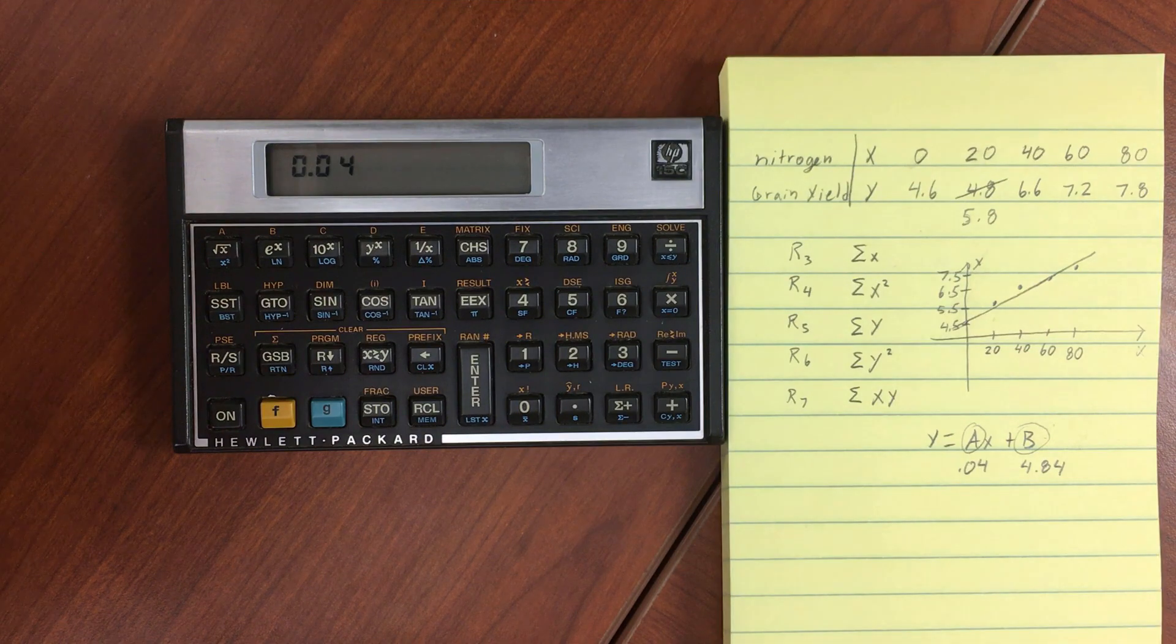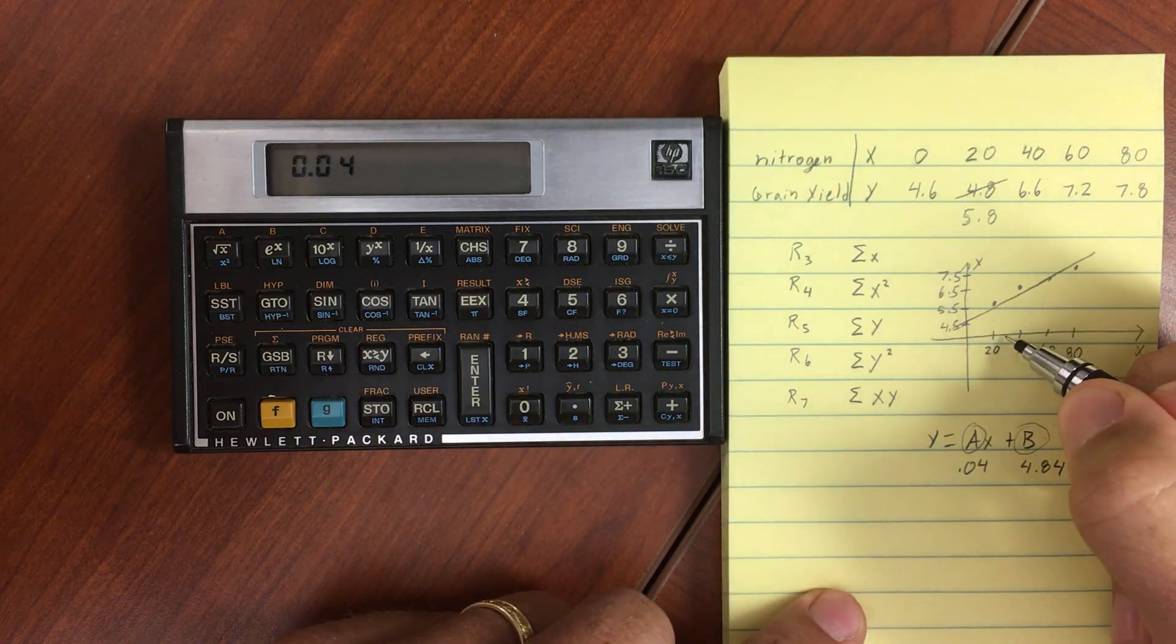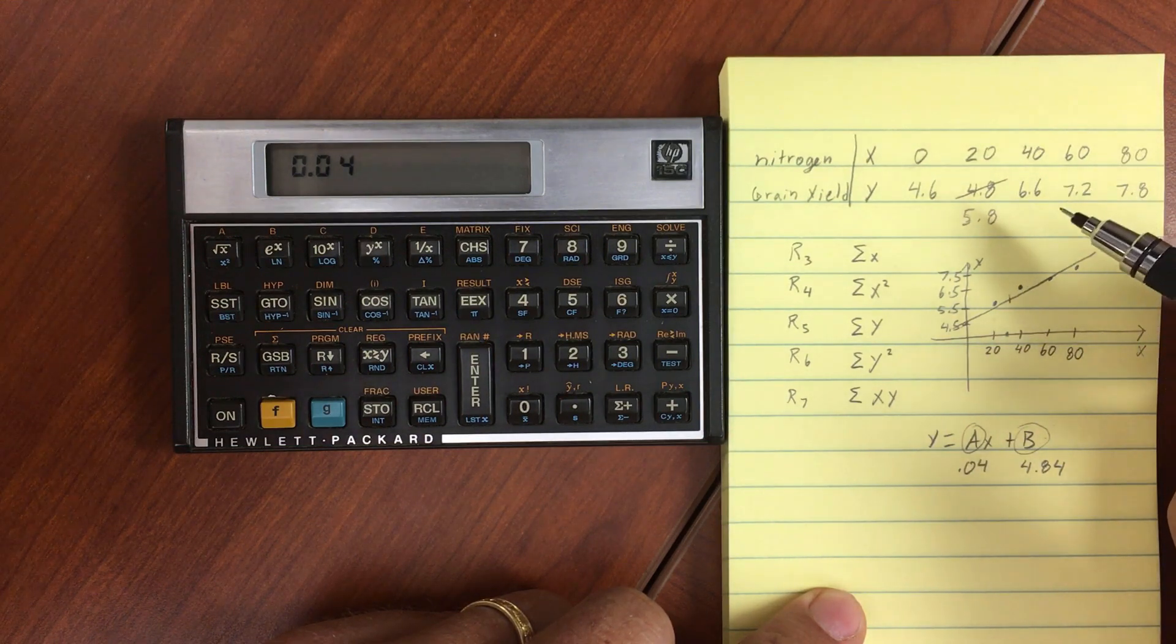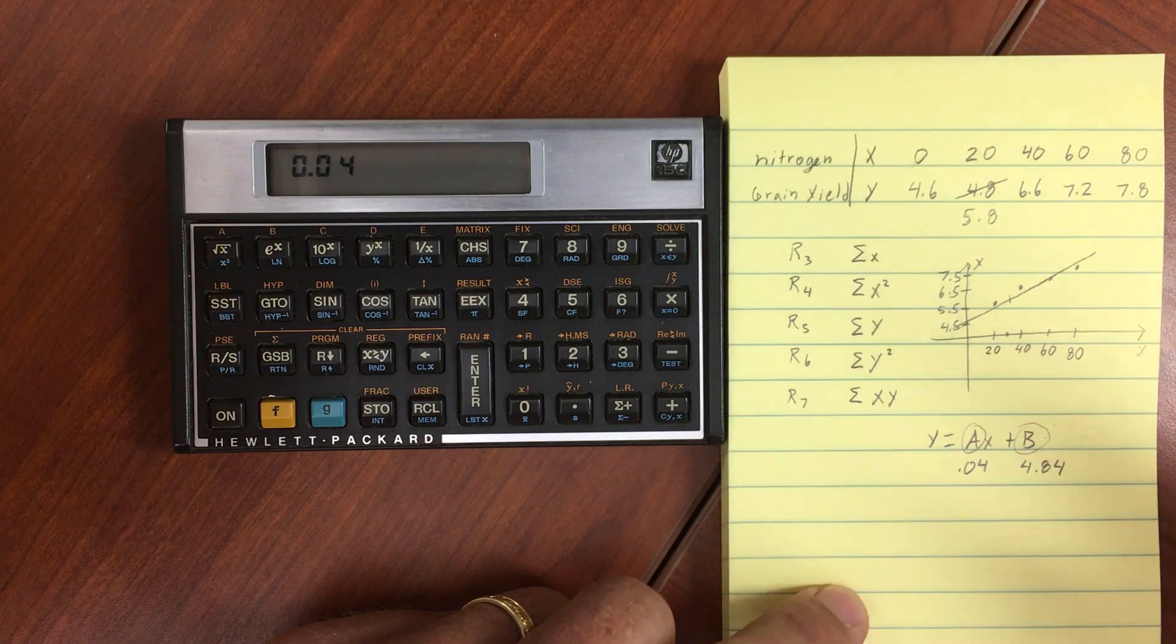Now if I wanted to make an estimate at some point, let's say I wanted an estimate for what 30 is going to be. I know it's going to be somewhere between 5.8 and 6.6.